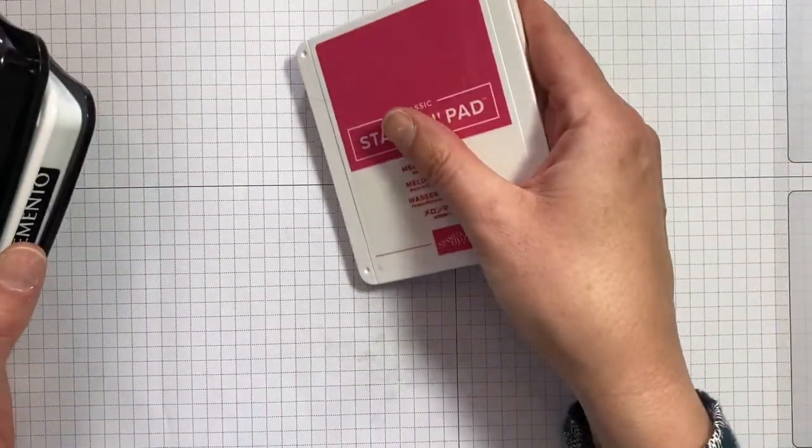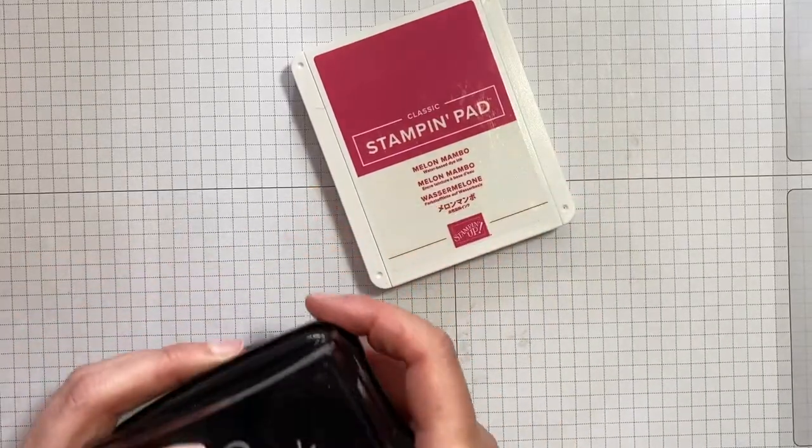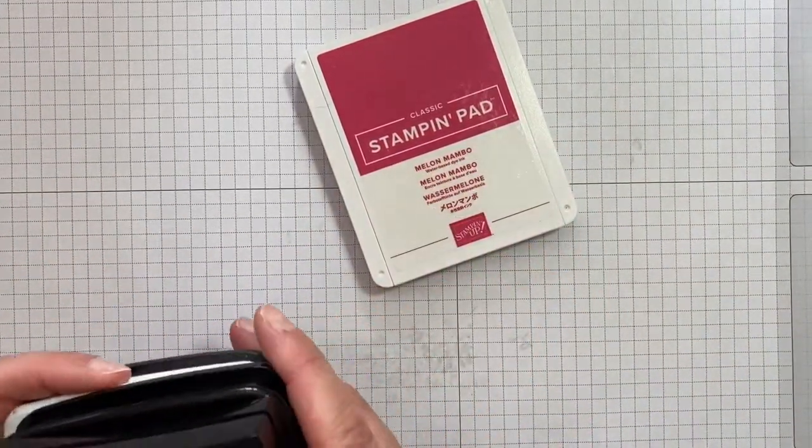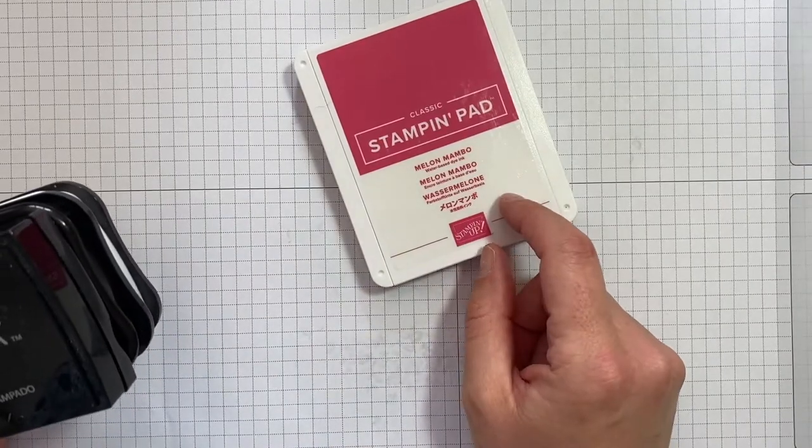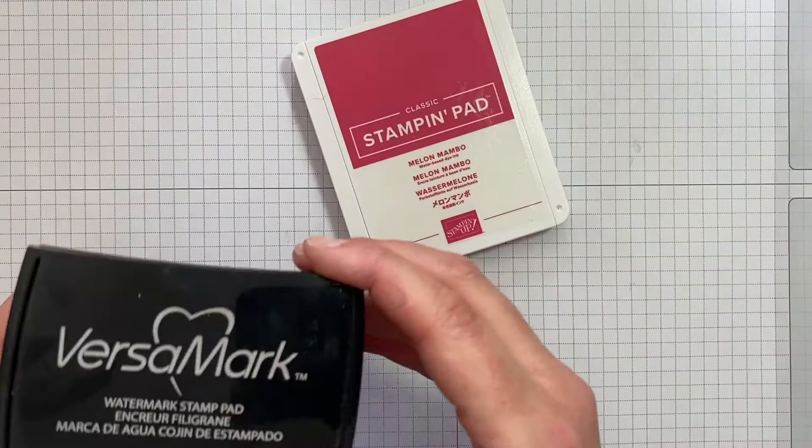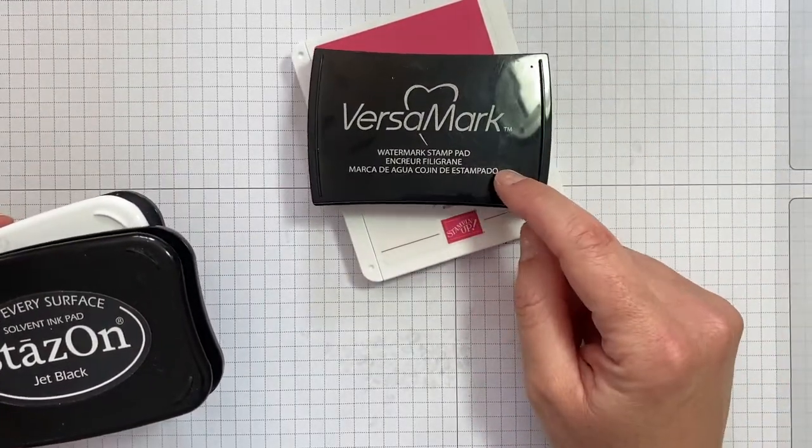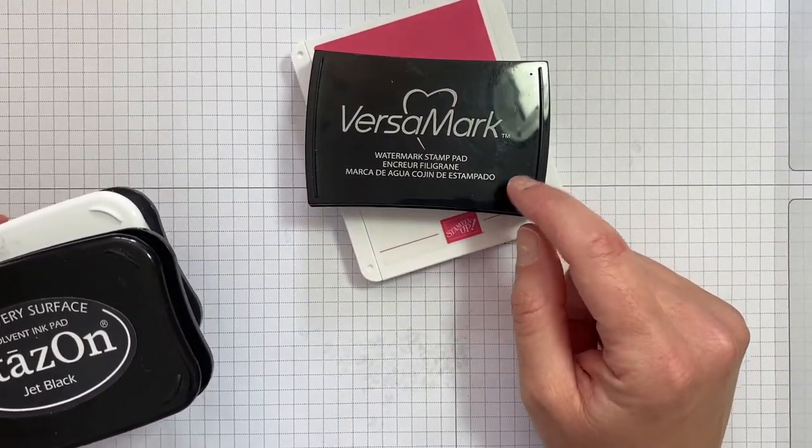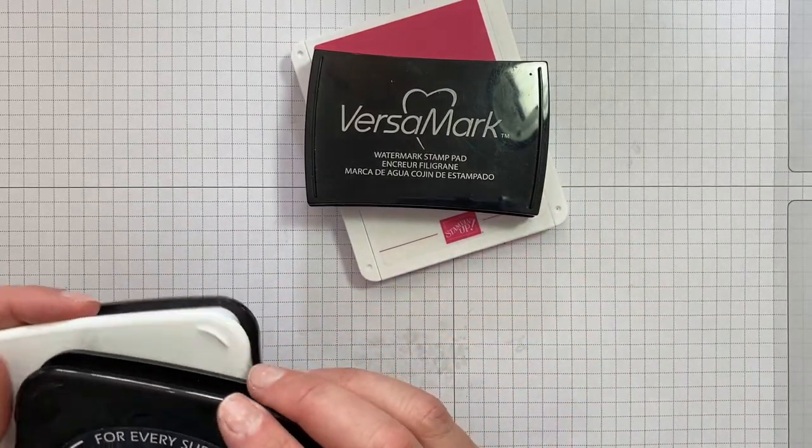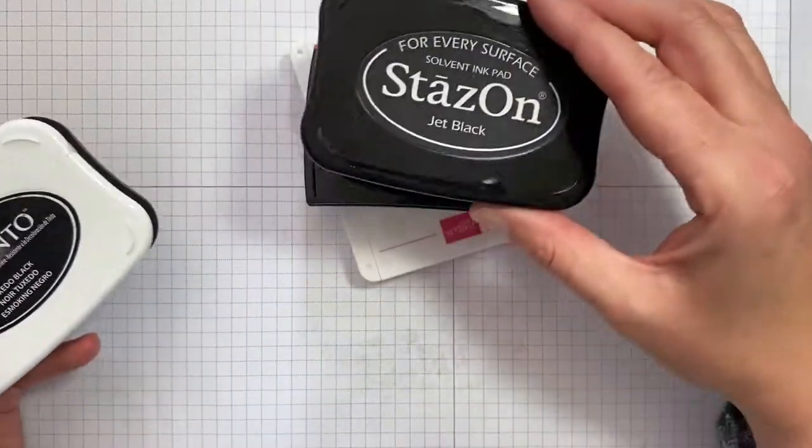Okay, here we are the other way up. Excellent. Right, I'll just show you which inks we're going to go through and then we'll do each one in turn. So we've got your standard classic stamping pad, which is available in 50 different colors. We have Versamark, which is sticky ink if you like, and is used for heat embossing or tone on tone stamping.